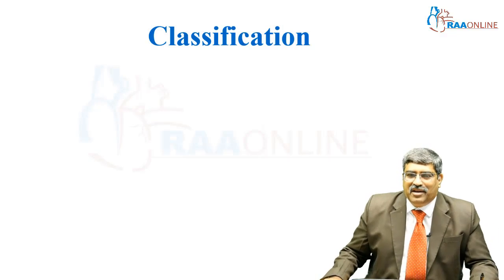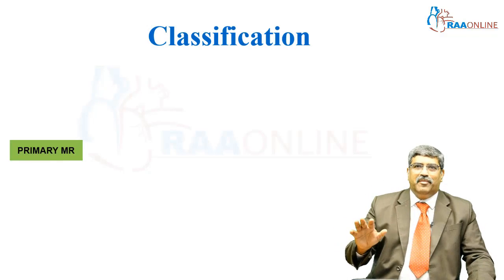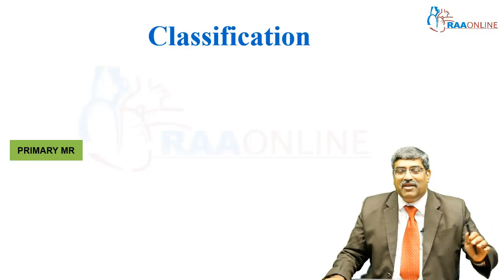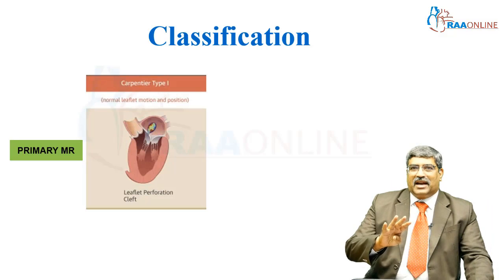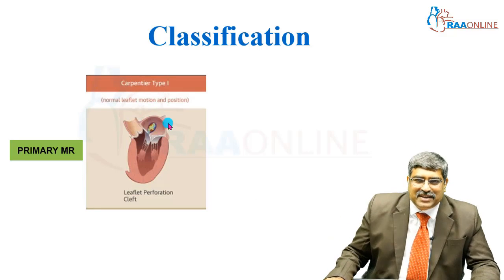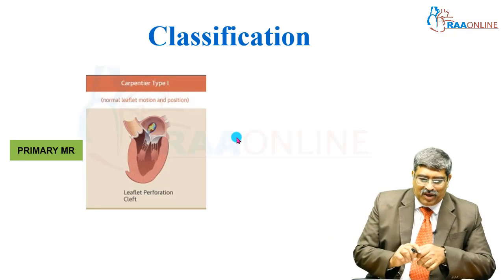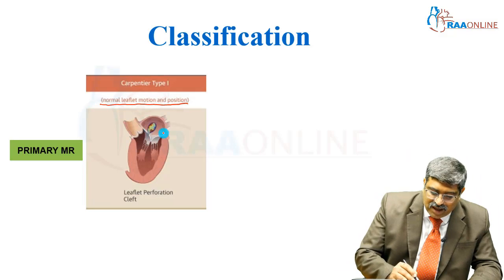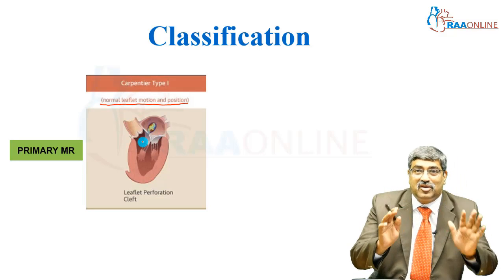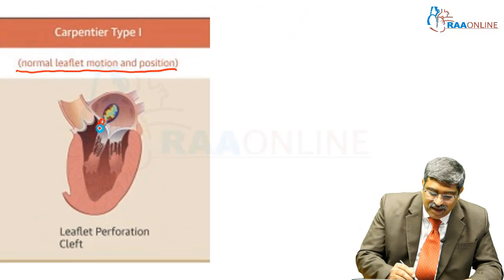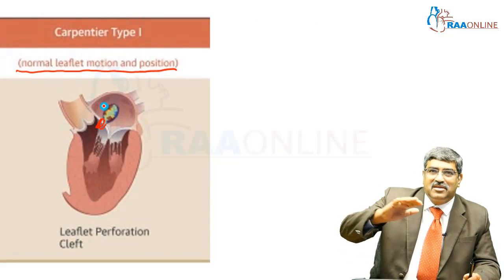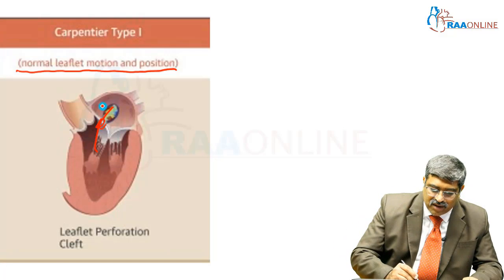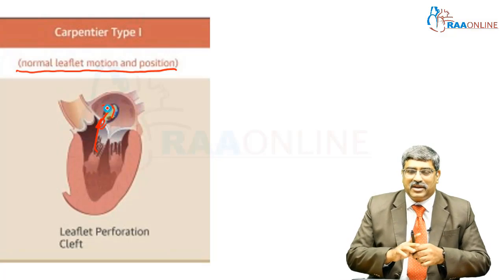Mitral regurgitation can be classified as primary, where the valve leaflet itself is affected. According to the Carpentier classification, there are three types. In Type 1, there is normal leaflet motion and position — the opening and closure is normal — but there is a leaflet perforation causing mitral regurgitation. Blood from the left ventricle goes into the left atrium via this cleft or perforation. This is Carpentier Type 1.